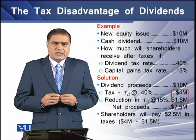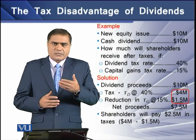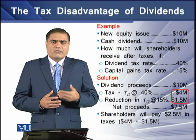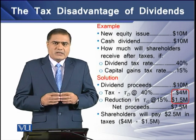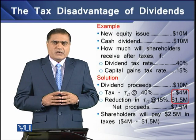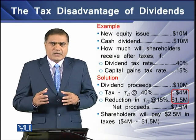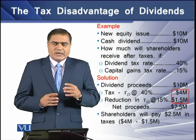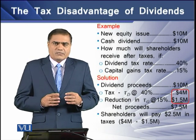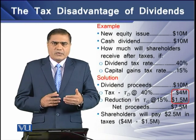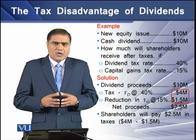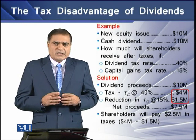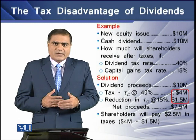As the firm pays its $10 million cash to shareholders, there is a decline of $10 million in the firm's overall value. This means that the capital gains of the shareholders will also be reduced by $10 million. As a result, there will be a reduction in the capital gains tax paid by shareholders of $1.5 million. So in net, shareholders are paying $2.5 million as tax on the $10 million proceed.